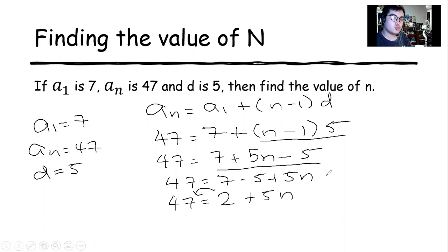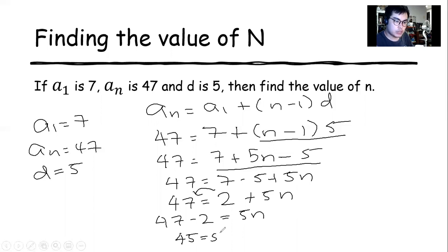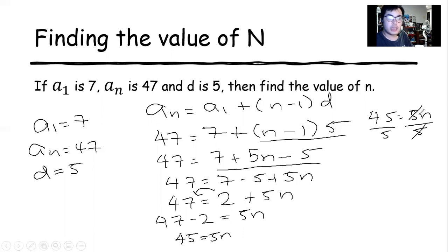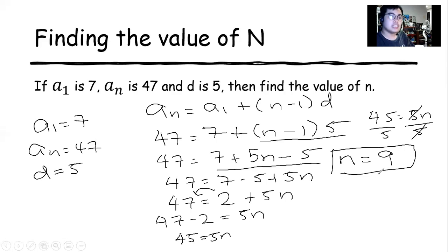We transpose 2 to the other side. So 47 minus 2 equals 5n, which gives us 45 equals 5n. Dividing both sides by 5, n has no coefficient anymore. So 45 divided by 5 is 9. The value of n is 9. Since our n is 9, we can say that our a sub 9 is equal to 47.